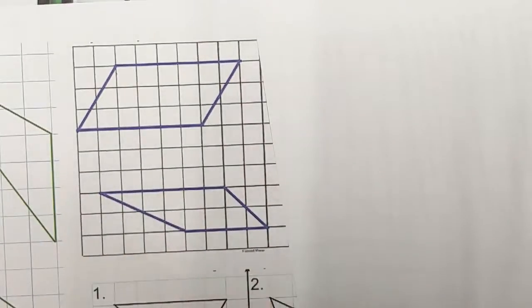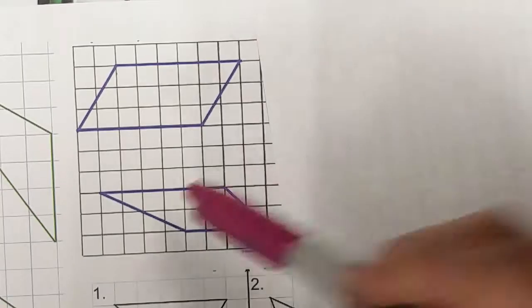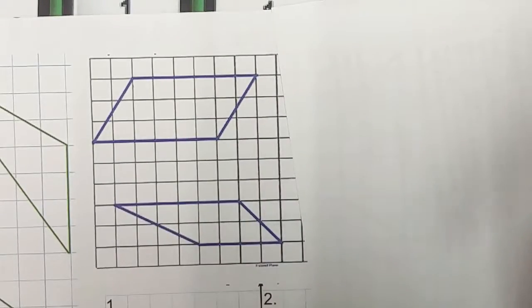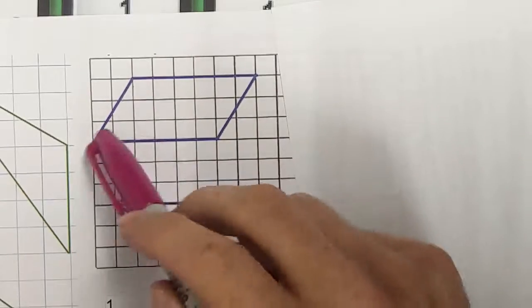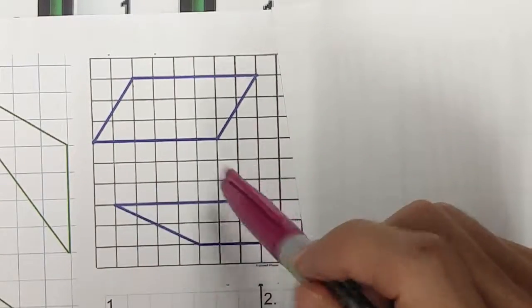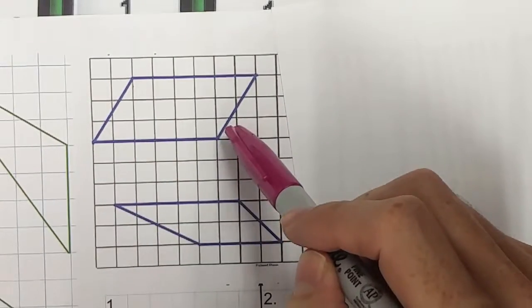Welcome, this is a quick video on today's lesson about finding the area of composite shapes or complicated shapes by using friendly shapes. You can see right here my first shape of today's lesson, I have a parallelogram.